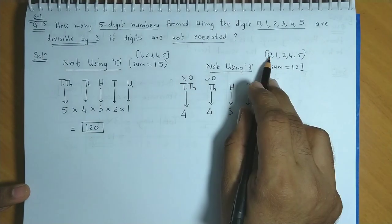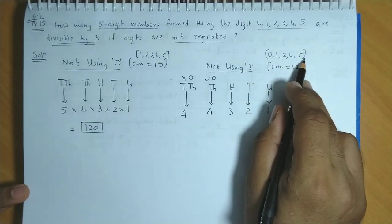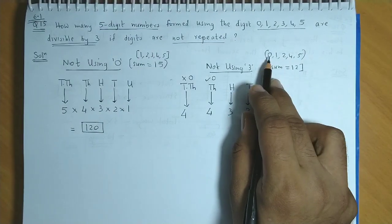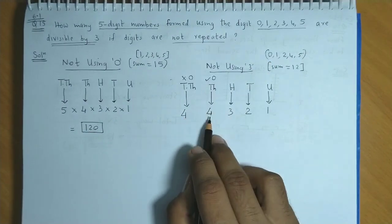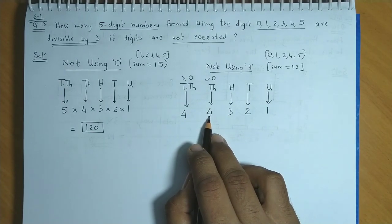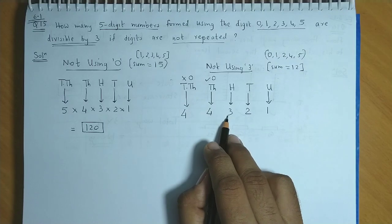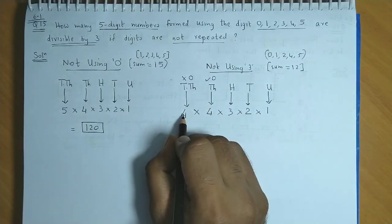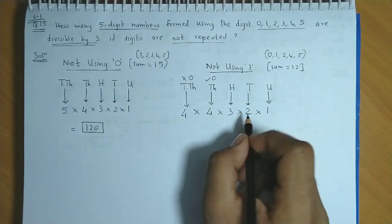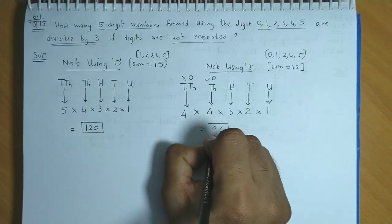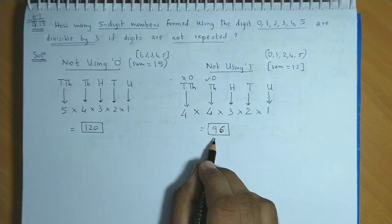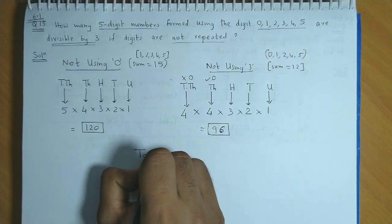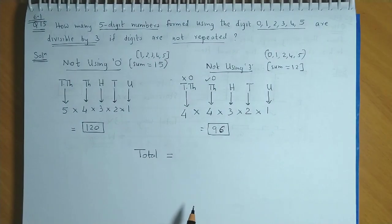Remember, in ten thousands we cannot use 0, that's why four ways. From these four, one will be used, then we'll be left with three numbers and the zero. That's why thousands place again becomes 4 ways. Then one digit reduces from the group, then 3 ways, 2 ways, and 1 way. So the numbers formed here will be 4 times 4 is 16, 16 times 6, that would be 96. So we can form five digit numbers in 96 ways which will be divisible by 3.